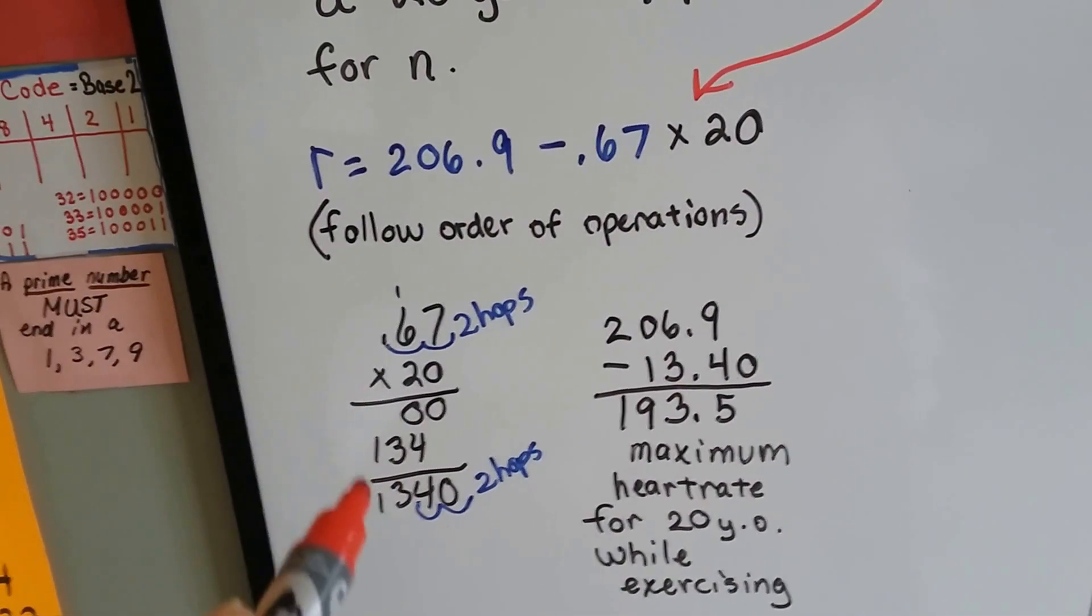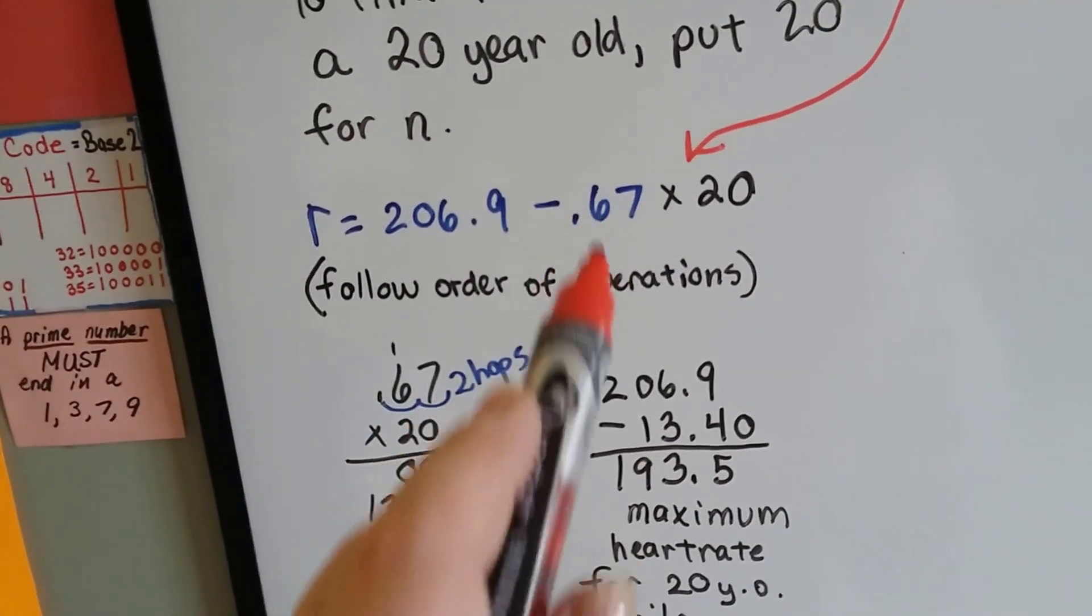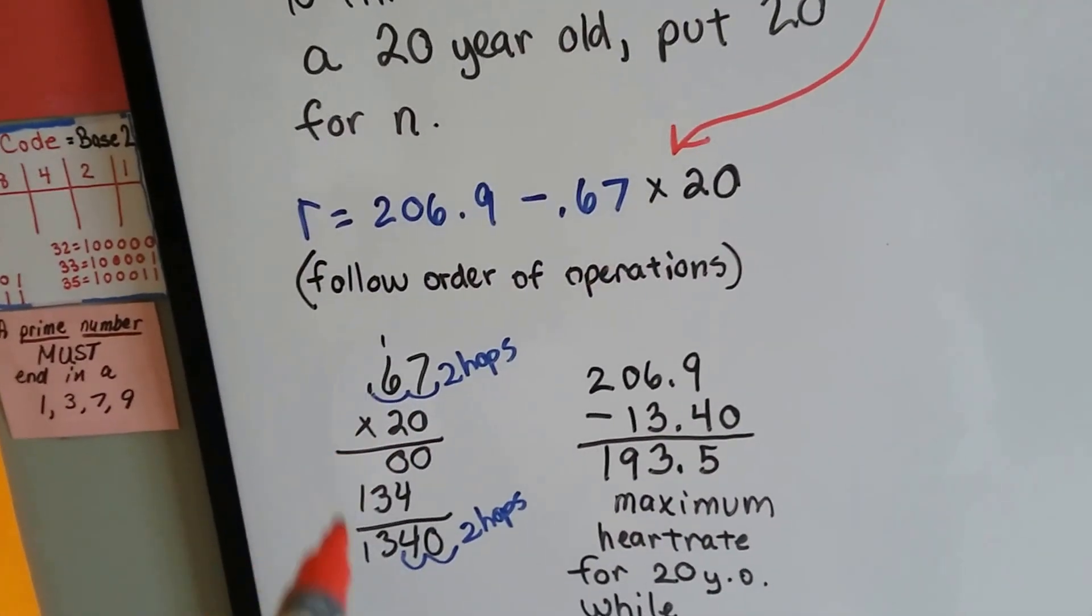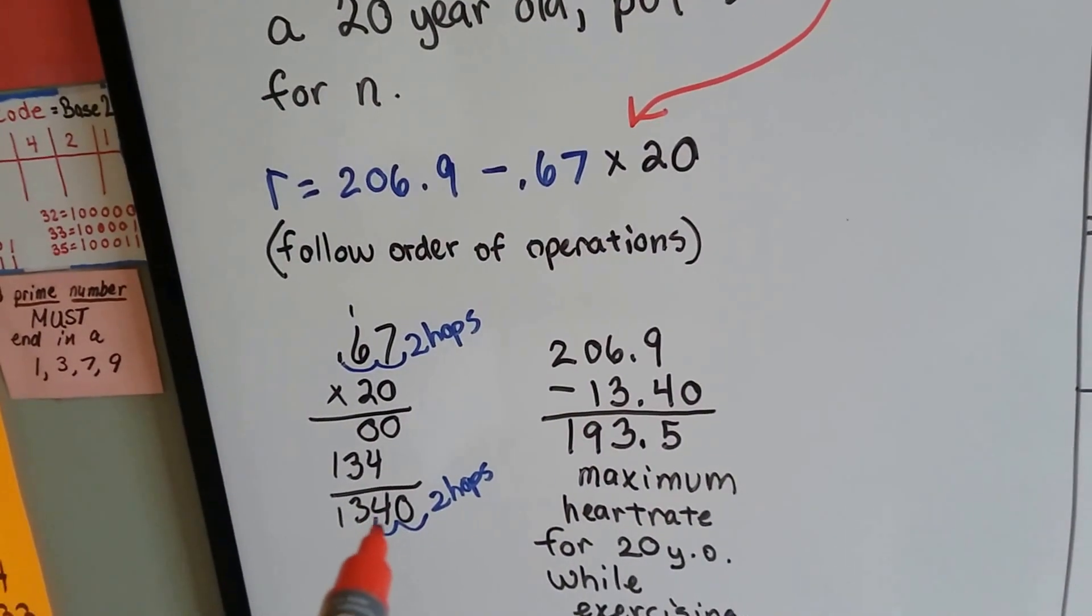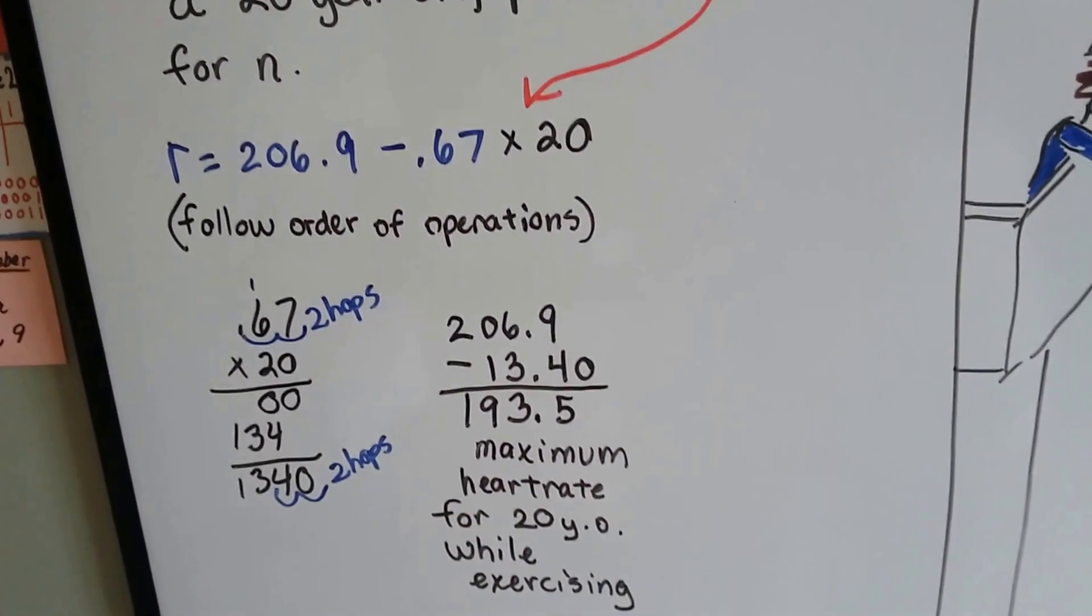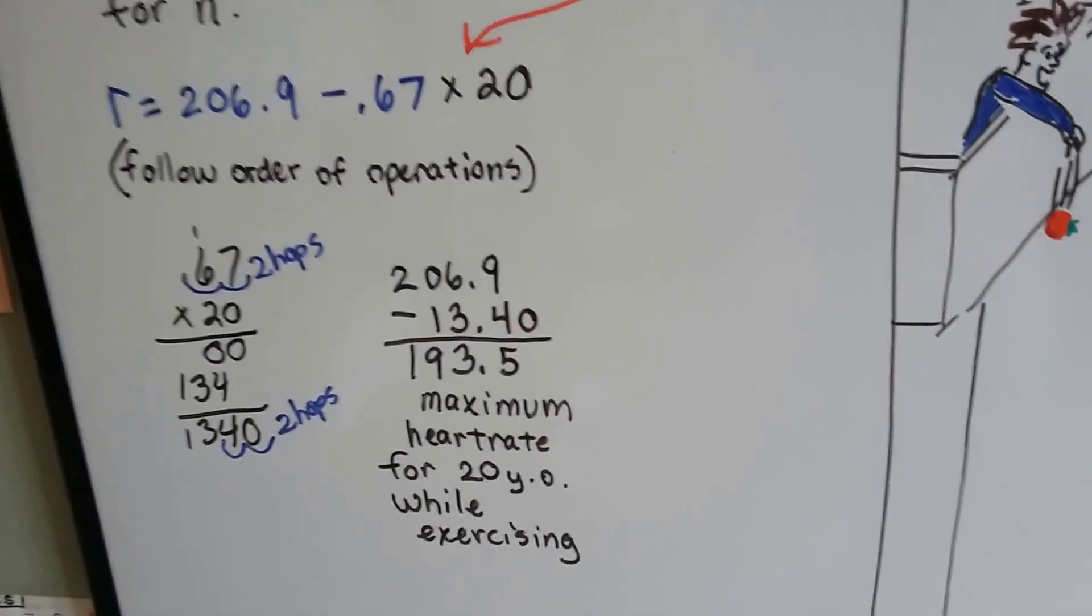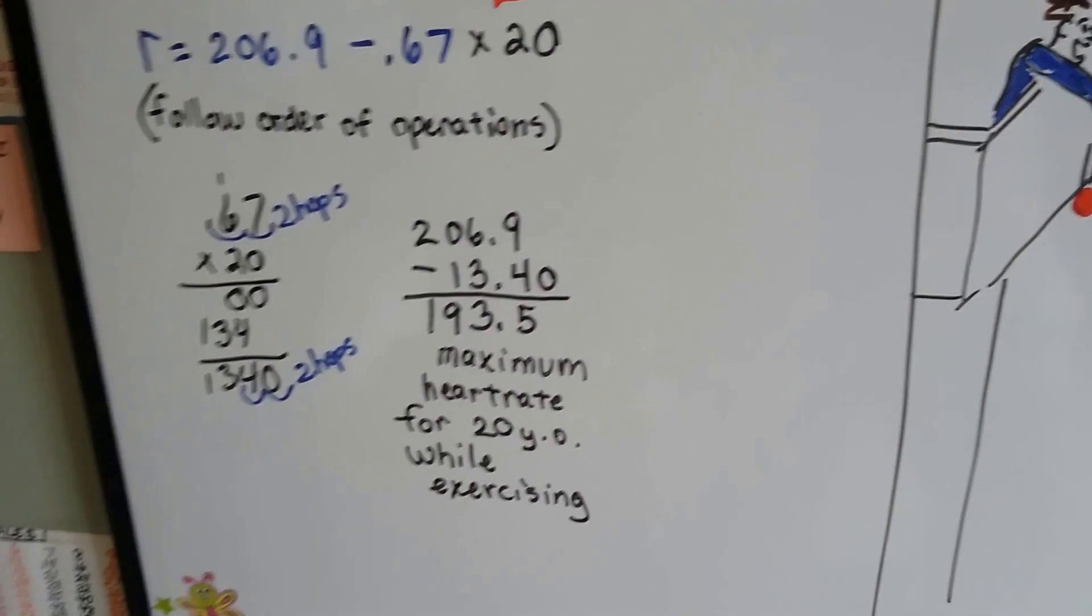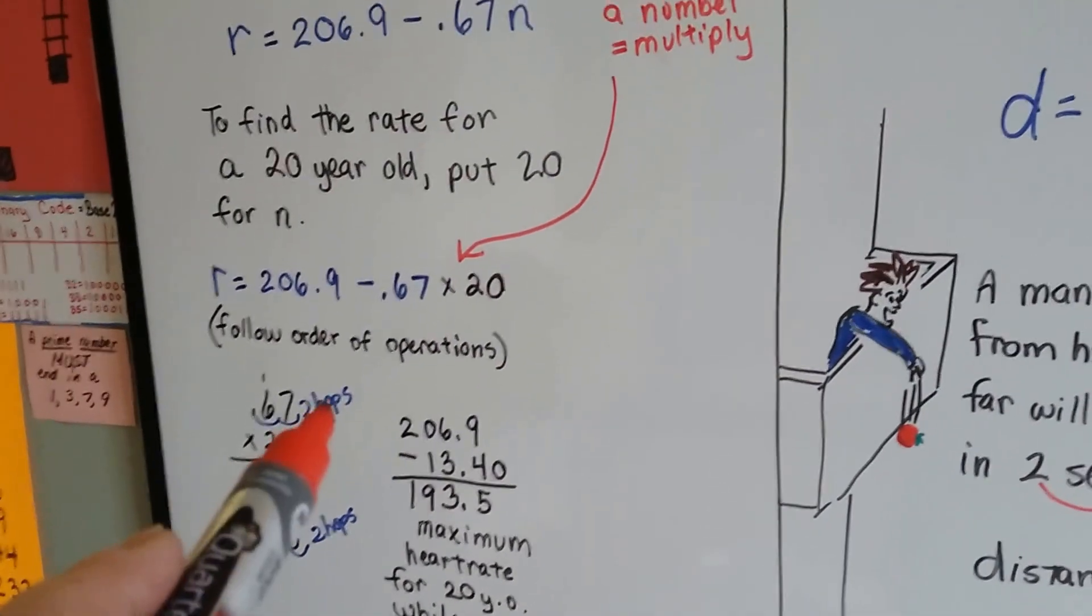.67 times 20 is 1340. Knowing that there was a decimal point here, we counted the hops in the equation and put that many hops into the product. So we have 13.4. We subtract this from the 206.9, and we get 193.5 for the maximum heart rate for a 20-year-old while exercising. Isn't that kind of cool? That's like the healthy heart rate for a 20-year-old when in the middle of exercising.